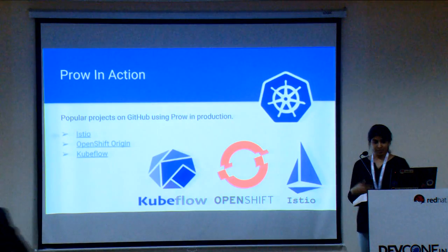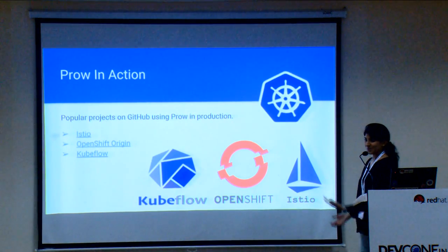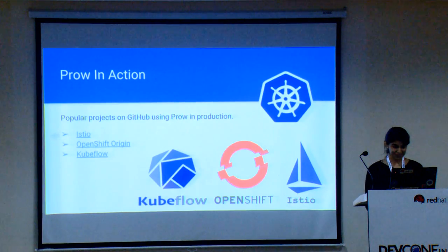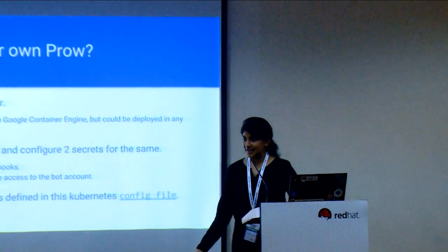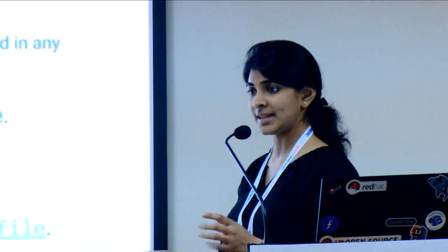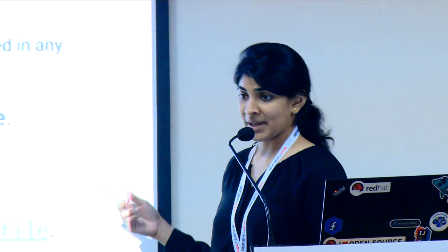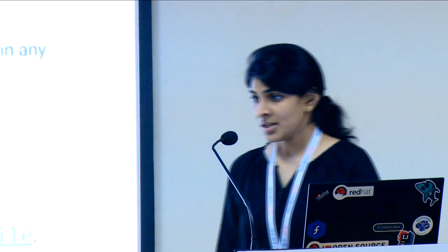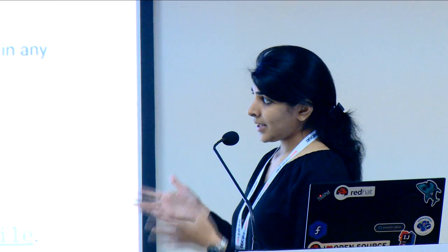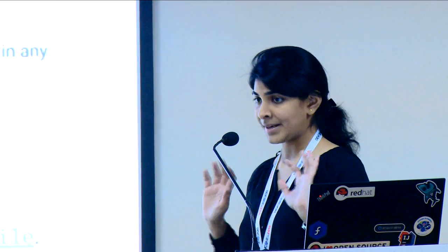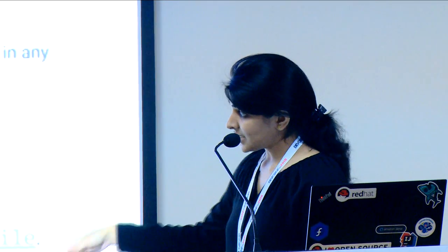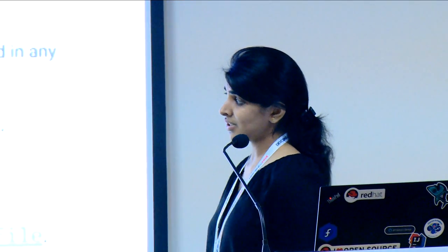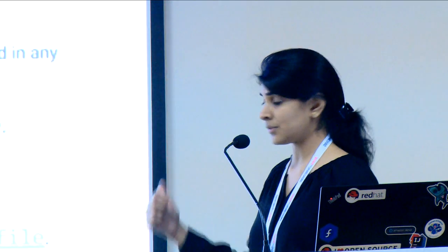But what if you want to add Prow to your own project? Suppose you want to add it to your Gluster repository — the first thing you need to do is bring up a Kubernetes cluster. I'll be demoing this shortly using Minikube for a local setup, though you can also deploy it on OpenShift. Then you need to create a GitHub bot account for your organization. Once you have that, you configure two secrets for Prow to talk to GitHub: the HMAC token and the OAuth token.